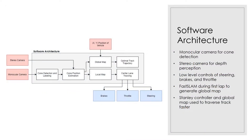The software architecture of the system shown in this video is in the figure on the left. A mono-ocular camera is used to obtain images for cone detection and labeling. A stereo camera is used to obtain a depth map to find the 3D position of the cones. A local map is generated based on the detected cones during the first lap and used for the low-level controls. FastSlime is used to generate a global map, and from the second lap onwards, this global map is used to traverse the track at a faster speed.